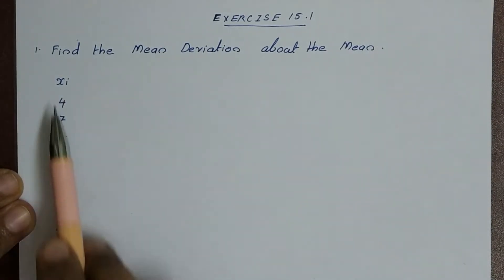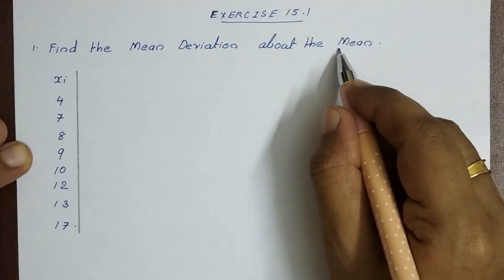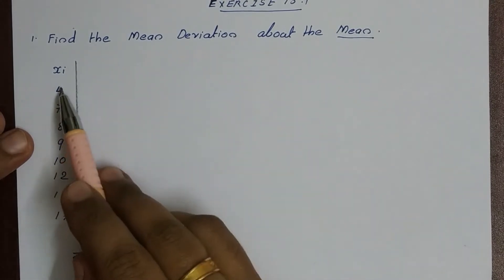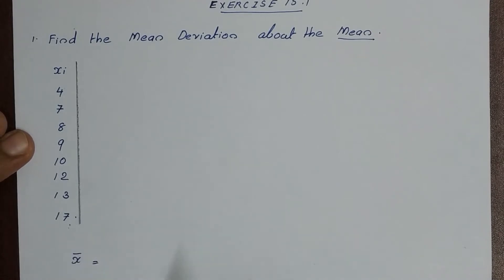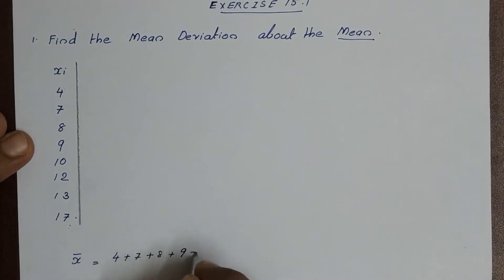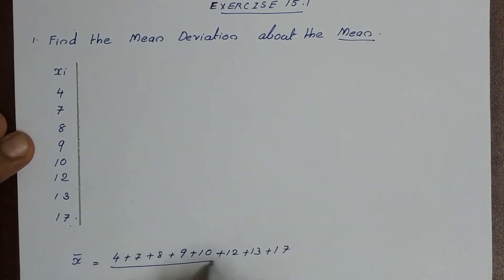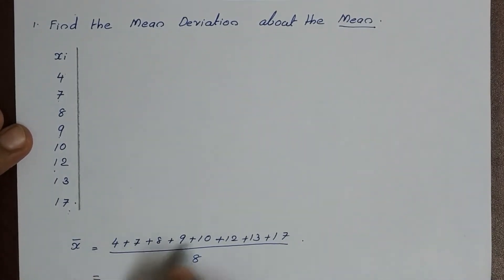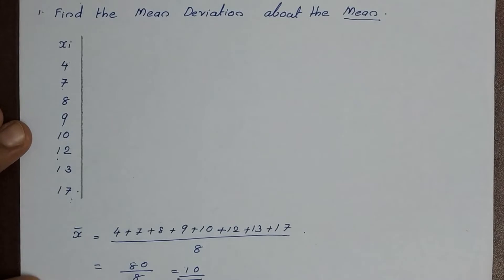So if we have an observation x, we have to find the mean deviation about the mean. Mean is denoted by x-bar. So x-bar is equal to the sum of observations divided by the total count. So 4 plus 7 plus 8 plus 9 plus 10 plus 12 plus 13 plus 17, the whole divided by 8. This total is equal to 80 divided by 8, which is equal to 10. So here we have the mean as 10.